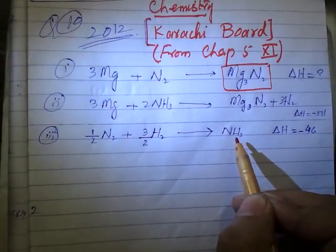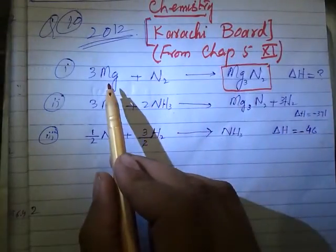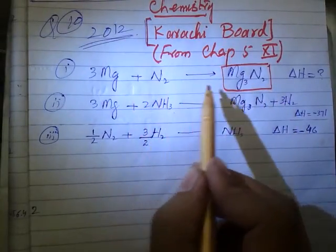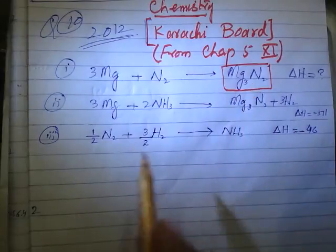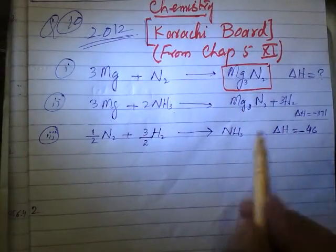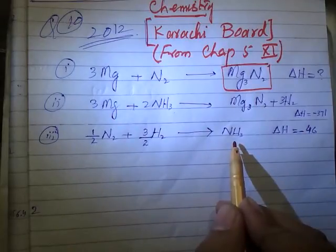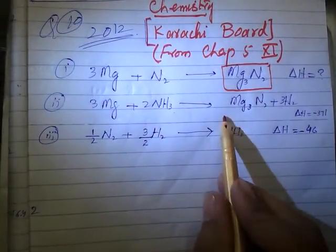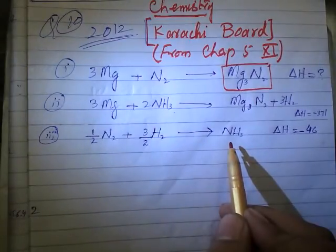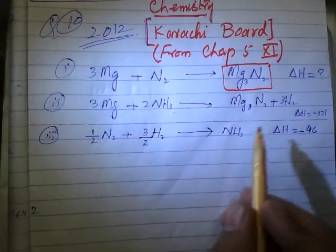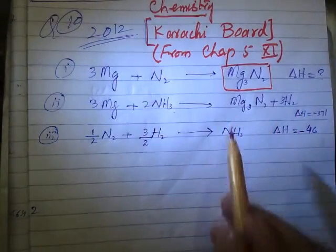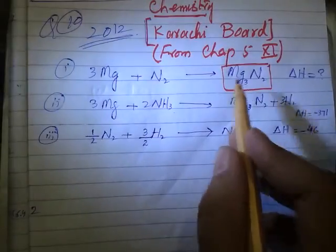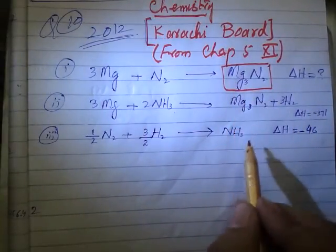Taking into consideration the required equation, you can see that it contains no H₂ and no NH₃ — no hydrogen and no ammonia. So we have to remove H₂ and ammonia from the other two equations. Once we remove them, combining those two equations will give us the first equation.